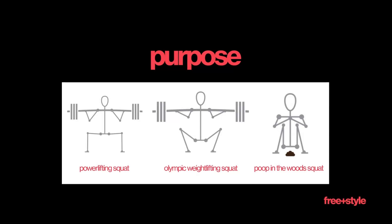Once we look at a squat through the lens of purpose, things become specific. A powerlifting squat, an Olympic weightlifting squat, and a squat in the woods are all squatting, but the expression is different — the powerlifter has a wider stance with the bar in a certain position, the weightlifter may be doing a front or back squat with a different stance, and Mr. Sticks in the woods is just trying to relieve himself. Purpose changes the expression of movement and allows us to see the infinite number of styles out there.